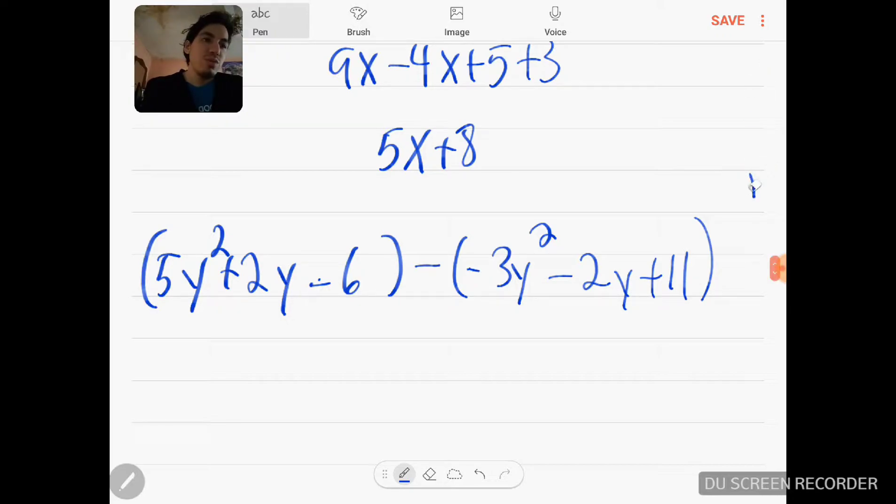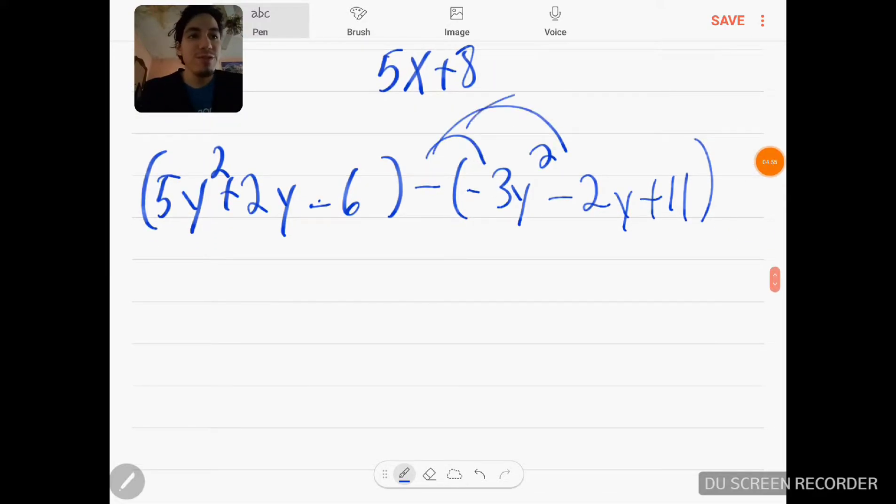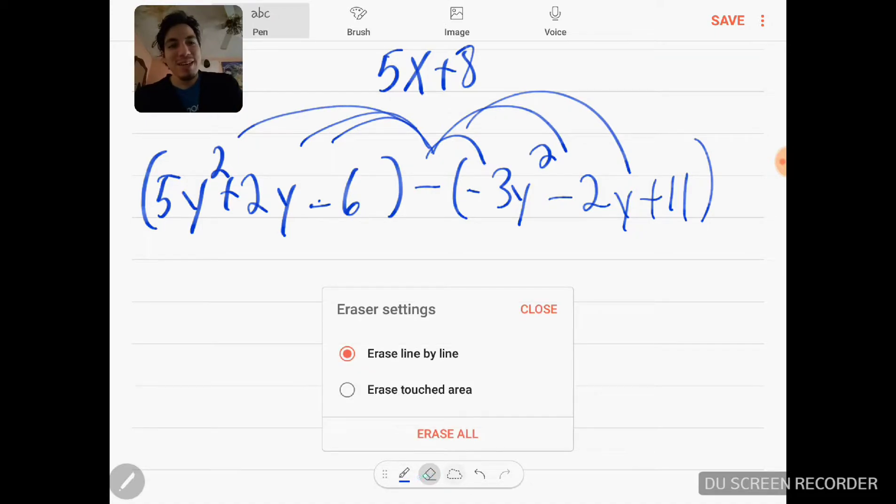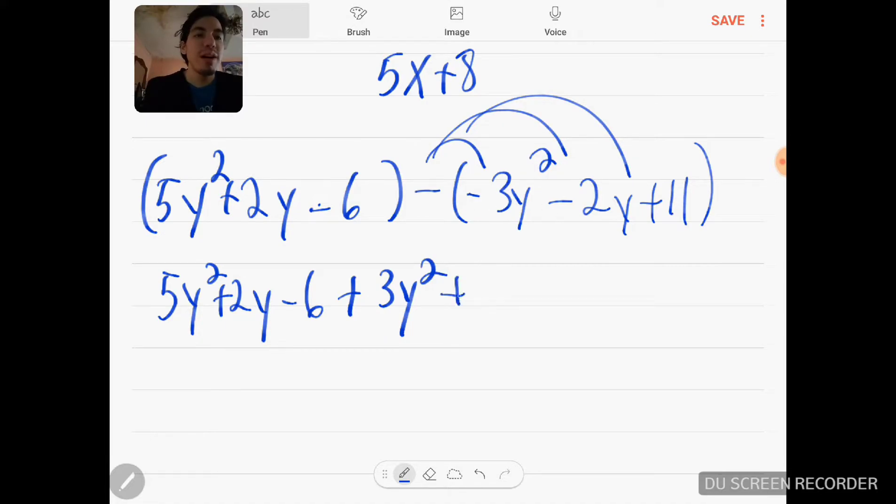So what does that leave me with? Well, first off, remember you have to distribute the negative sign into every single term that's being subtracted. Don't ever do this—please don't do that. Don't distribute the wrong way. That doesn't make any sense. You're going to end up regretting it, and it's not worth it. Just don't do that. Always distribute to the right, in this case.